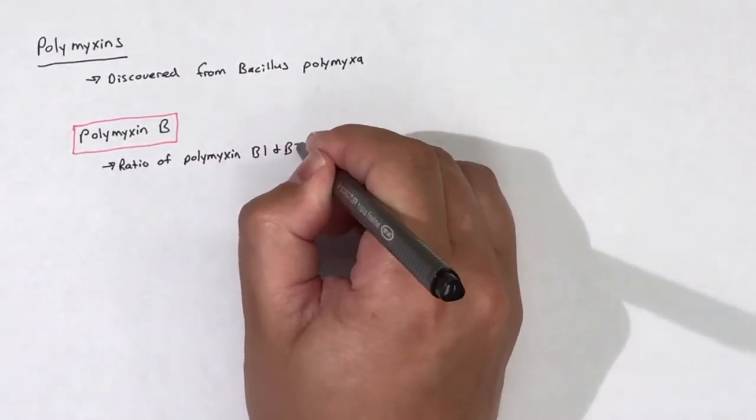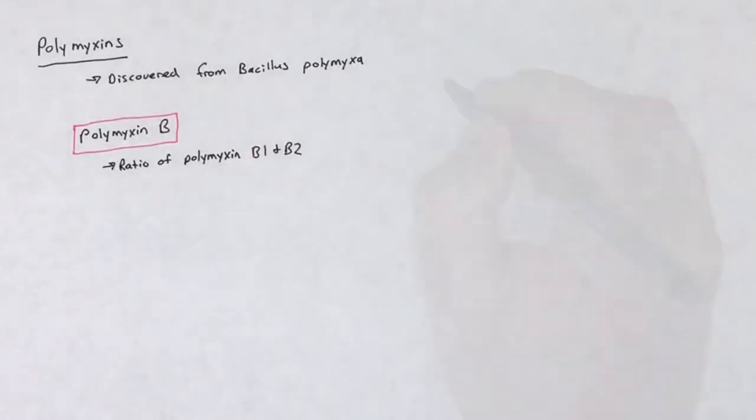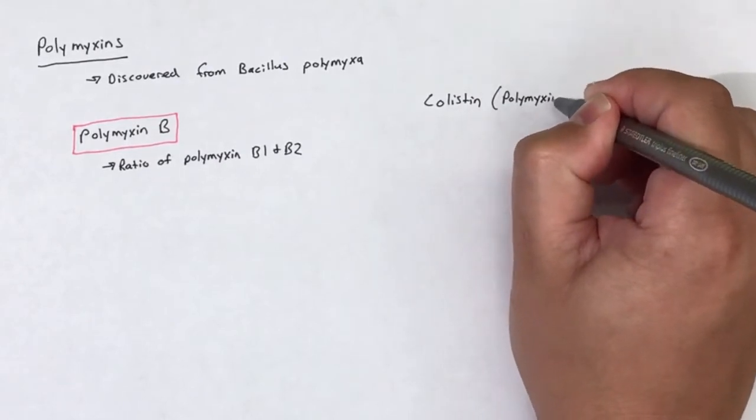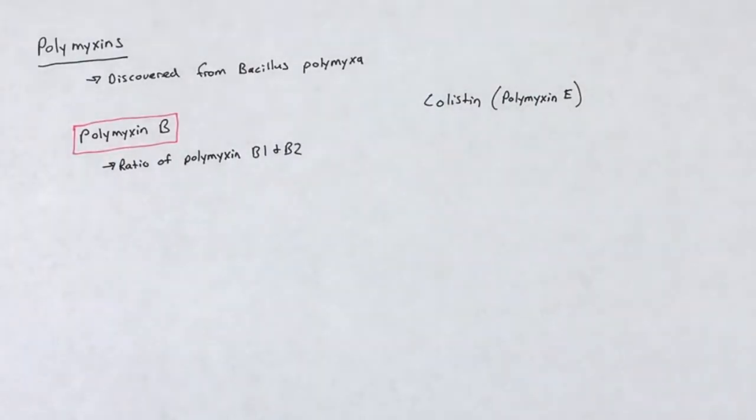Polymyxin B is made up of a ratio of polymyxin B1 and B2. Polymyxin E was first discovered from a different bacteria species, Bacillus colistinus.